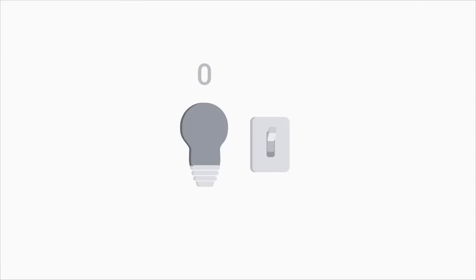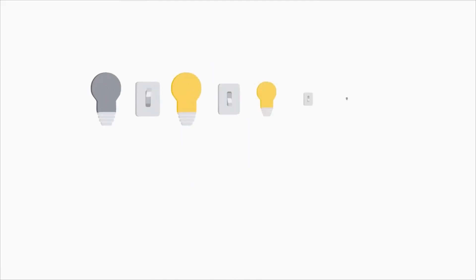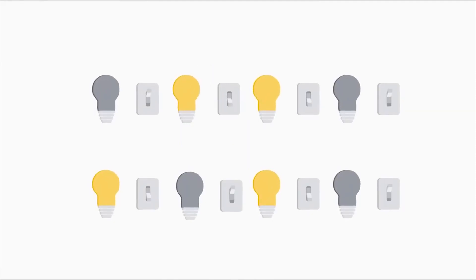Imagine we have a light bulb and a switch that turns the state of the light on or off. If we turn the light on, we can denote that state as one. If the light bulb is off, we can represent the state as zero. Now imagine eight light bulbs and switches — that represents eight bits with a state of zero or one.